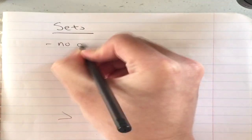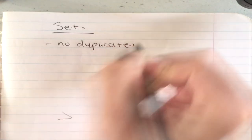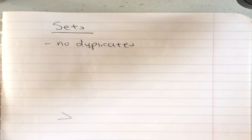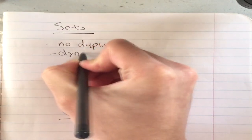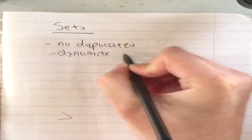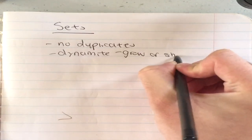So what is a set? Basically, in math, sets are pretty much the same thing as they are in math — there are no duplicates. That's a key thing about sets: no duplicates. Now in mathematics, sets are unchanging, but in computer science, sets are manipulated by algorithms to grow or shrink over time. So we call these dynamic sets.